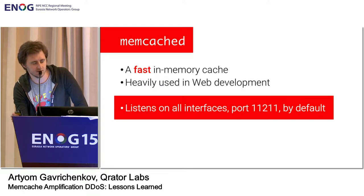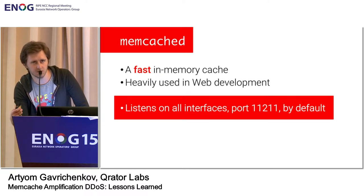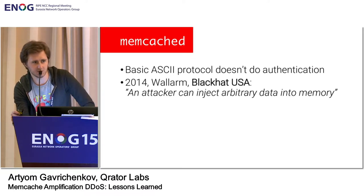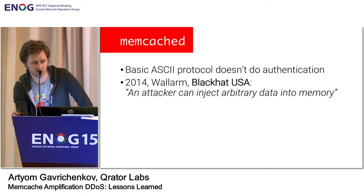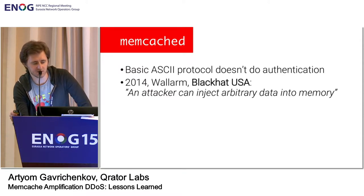By default, Memcached listens on all interfaces on UDP port 11211. In February and March, there were lots of machines with open UDP port 11211 on the internet. The ASCII protocol used by Memcached does not do any identification or authentication — it was designed only for local secured networks. They have not built in any authentication at all. An attacker can inject arbitrary data into memory, and in 2017, three Chinese researchers found that attackers can also send data from memory to a third party via spoofing the victim's IP address.